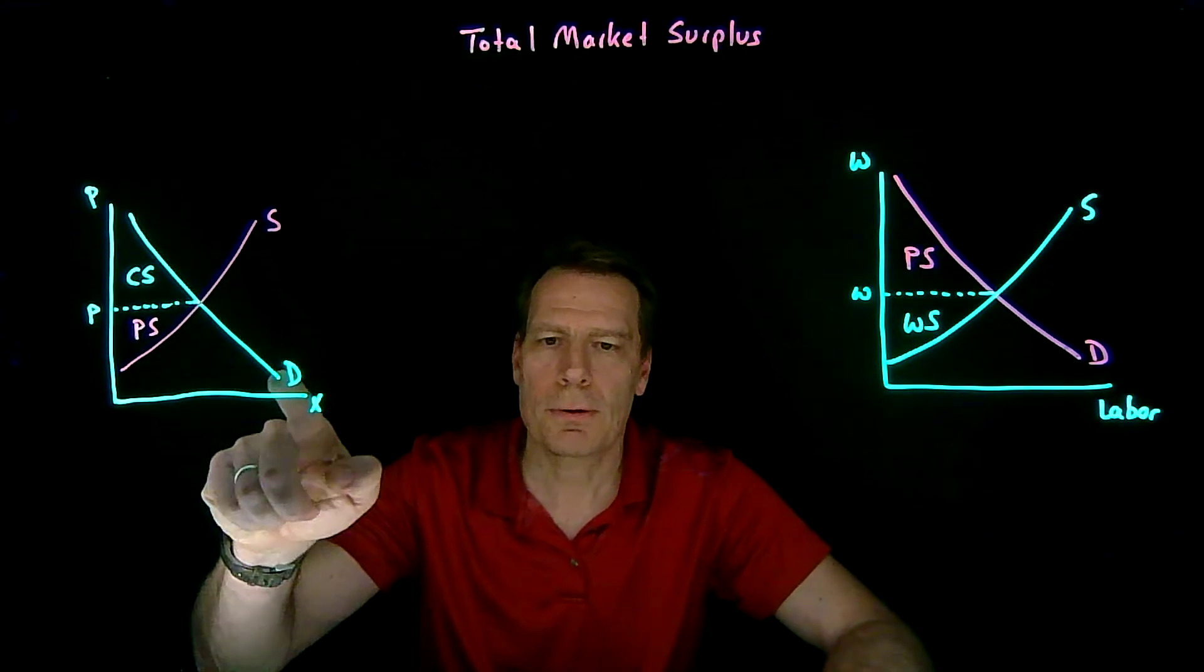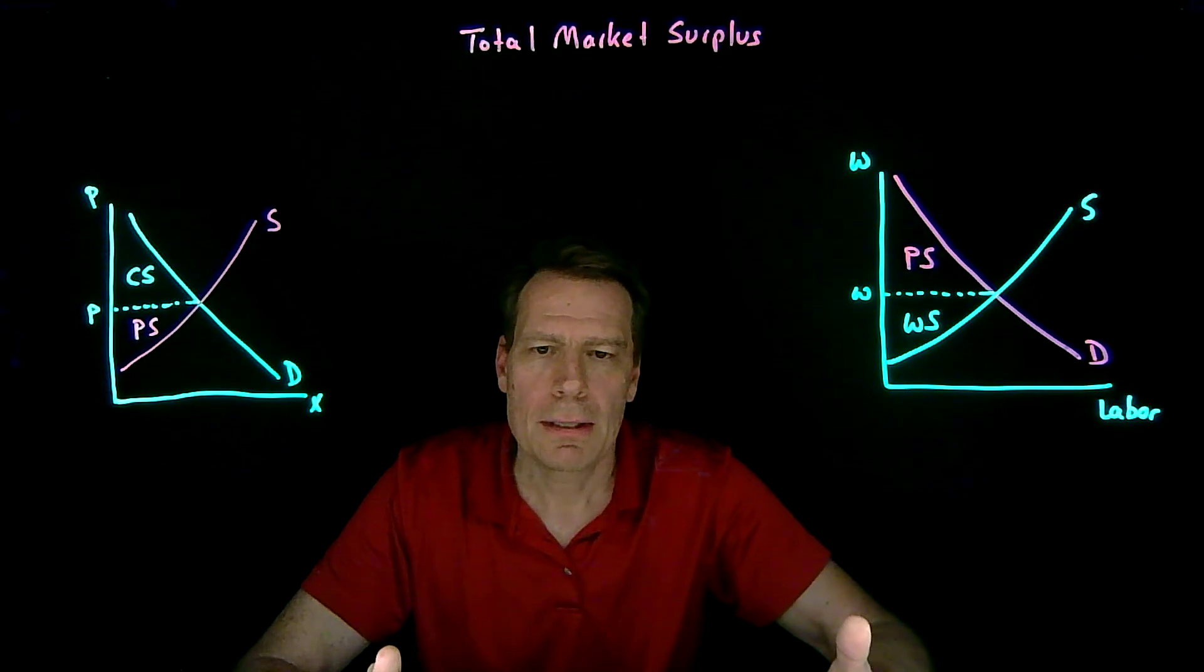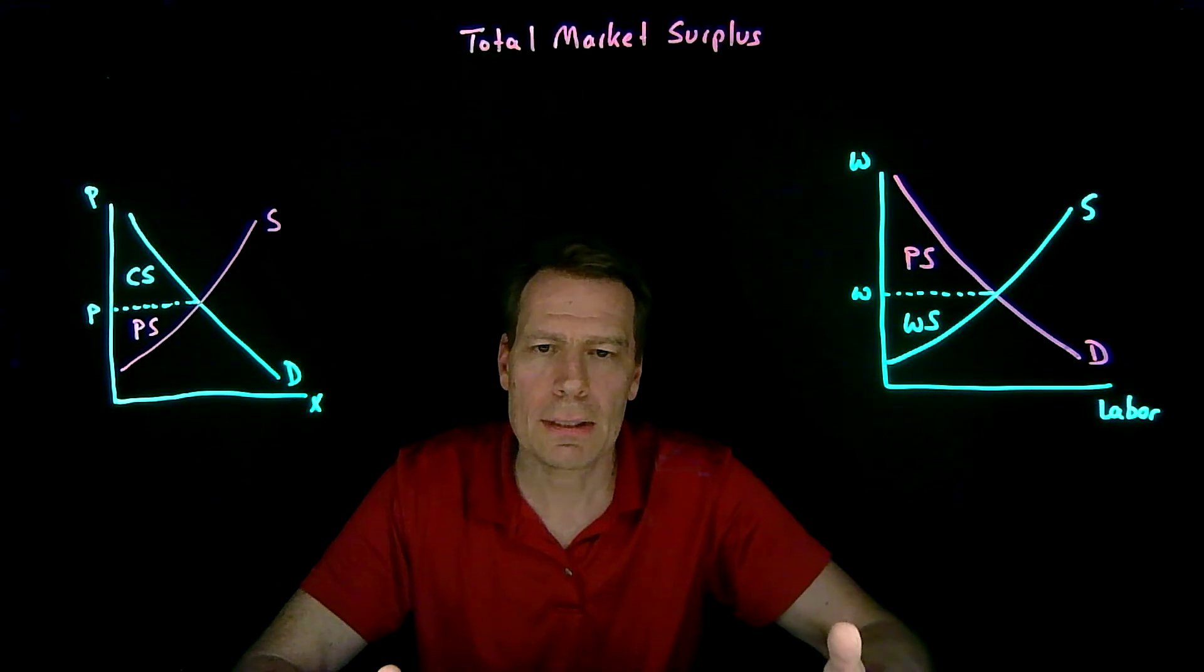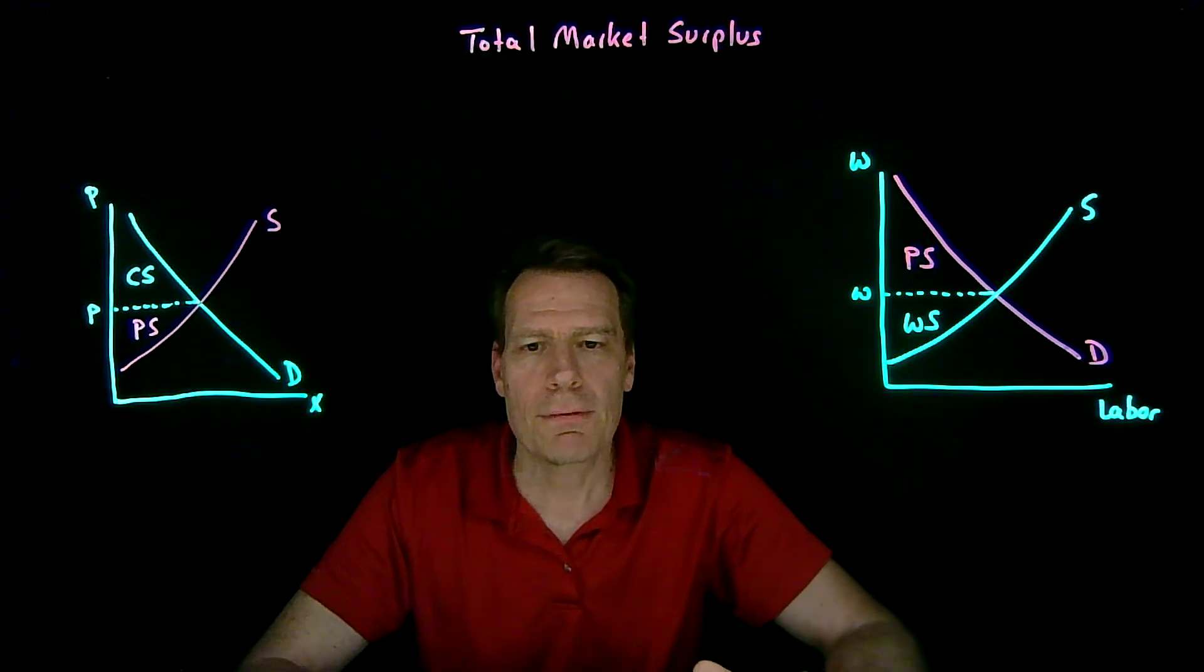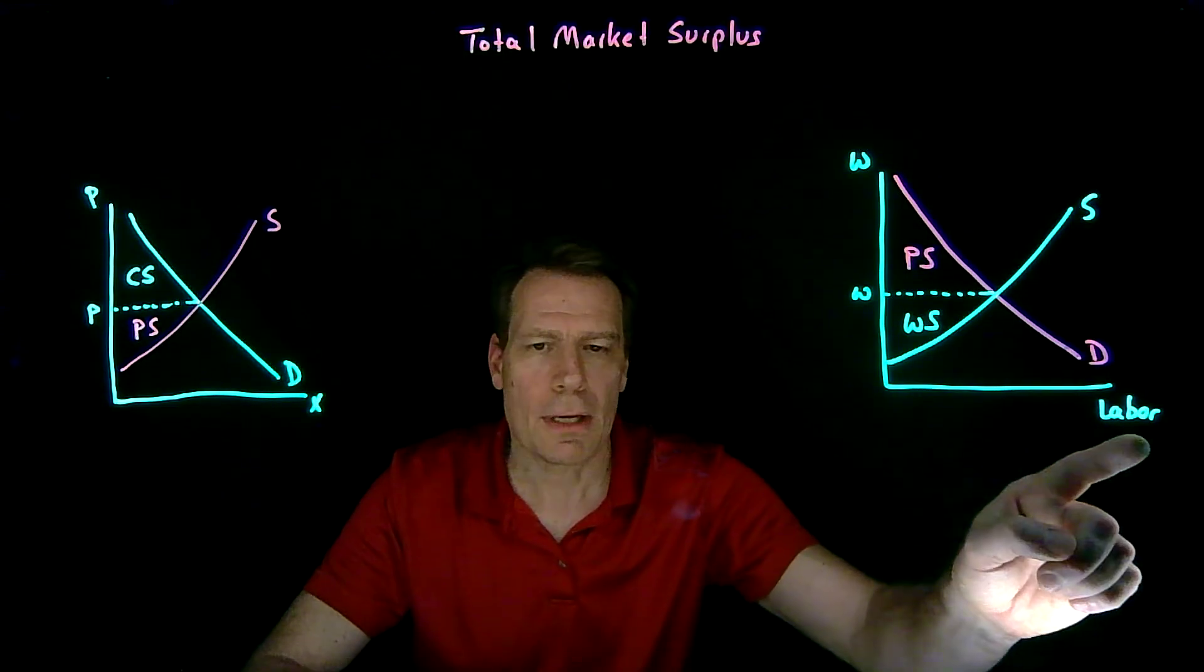just like this demand curve, contains income and substitution effects, unless there are no income effects. And the only way there aren't any income effects is if we've assumed quasilinearity in the good that's on the horizontal axis.